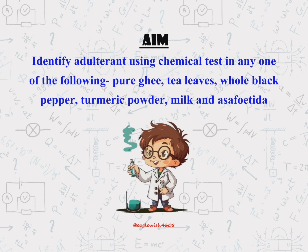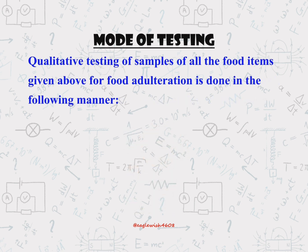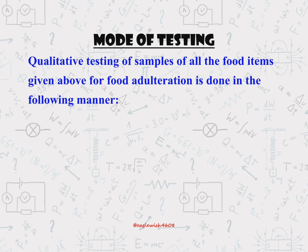The aim of this project is to learn how to identify adulterants in common food products. We'll be focusing on a few examples: pure ghee, tea leaves, black pepper, turmeric powder, and milk. Each of these food items is commonly adulterated, and we'll be using different chemical methods to detect these adulterants.